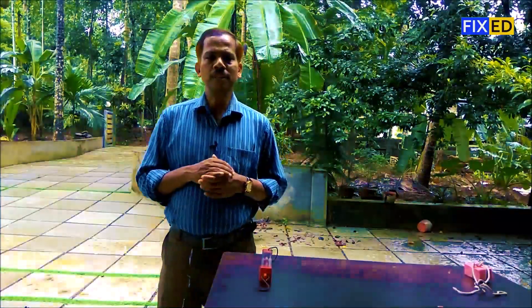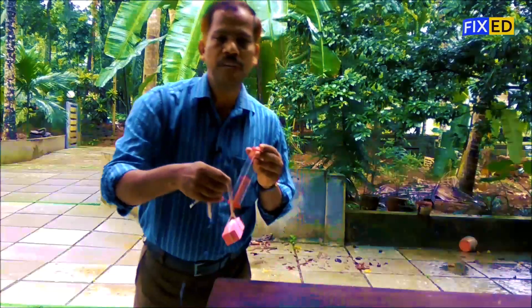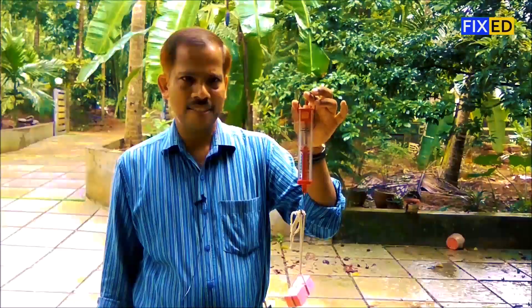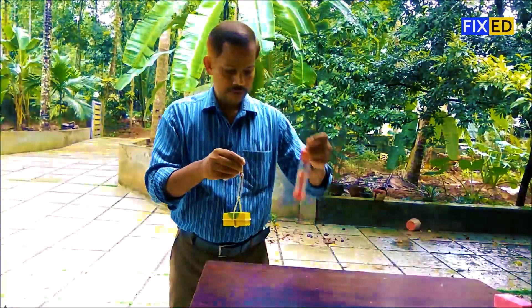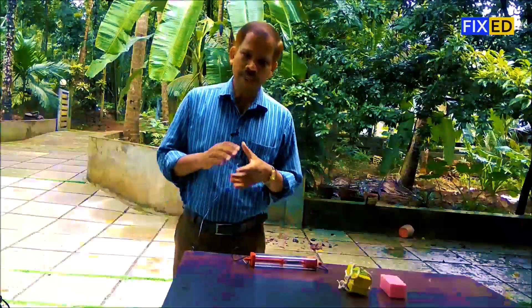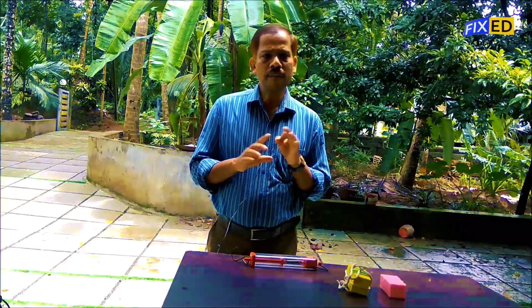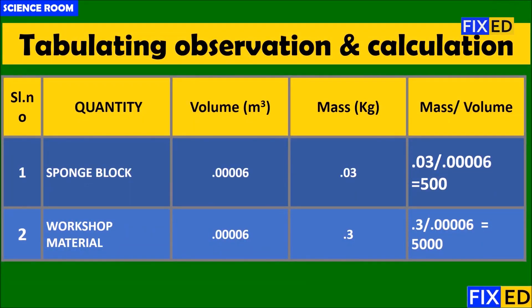Now, size 1 cm³. The weight of the workshop material is 300 grams. The weight of the workshop material is 30 grams. The weight of the workshop material is 12 grams. The structure of the mass and volume is a larger weight scale.